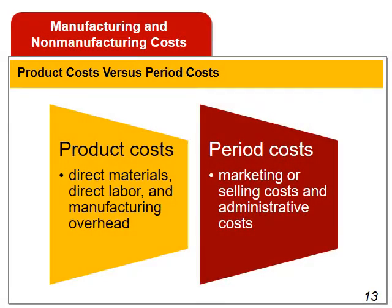Costs can also be classified as period or product costs. Product costs include all the costs involved in acquiring or making a product — specifically direct materials, direct labor, and manufacturing overhead. Consistent with the matching principle, product costs are recognized as expenses when the products are sold. Period costs include all marketing or selling costs and administrative costs. All selling and administrative costs are typically considered to be period costs.